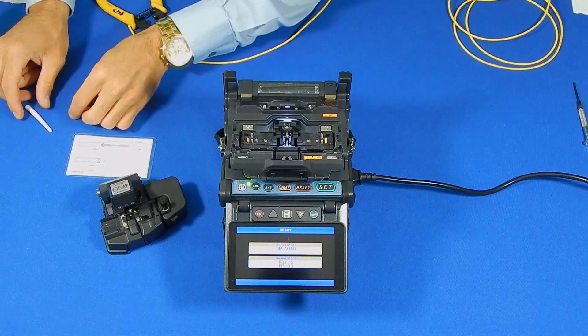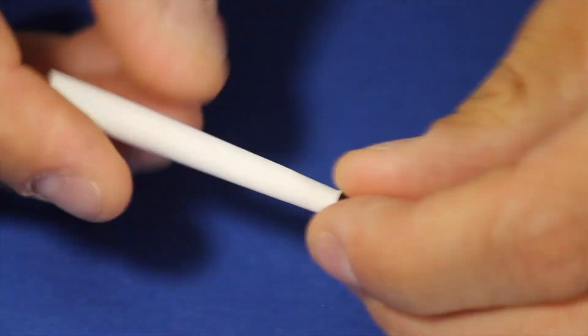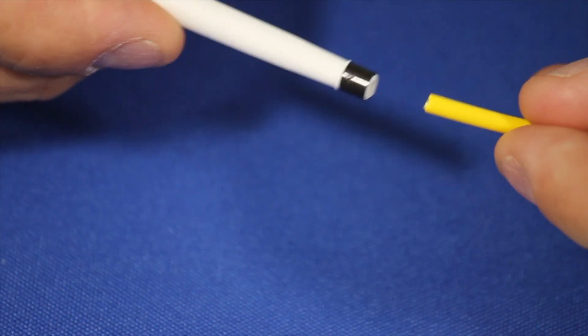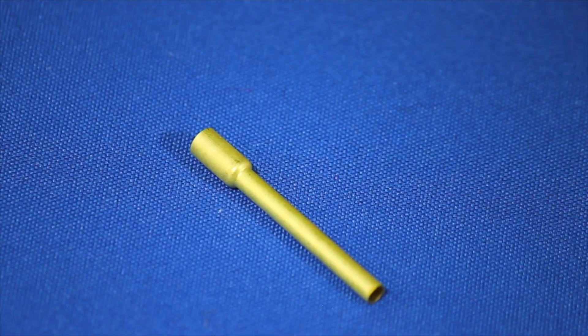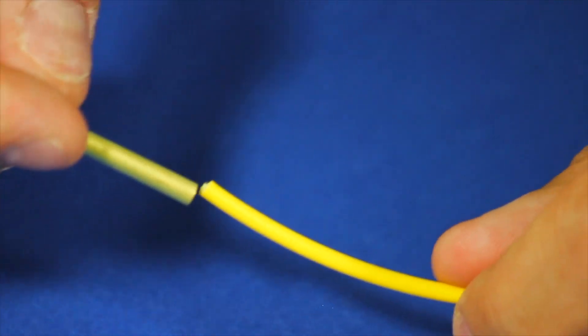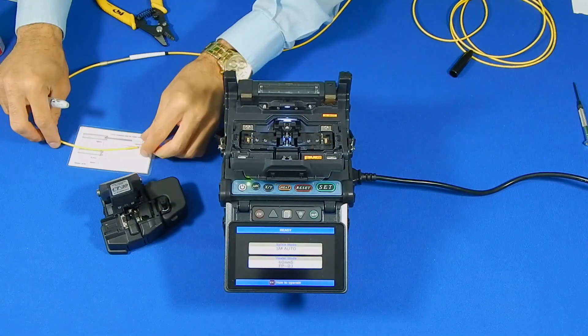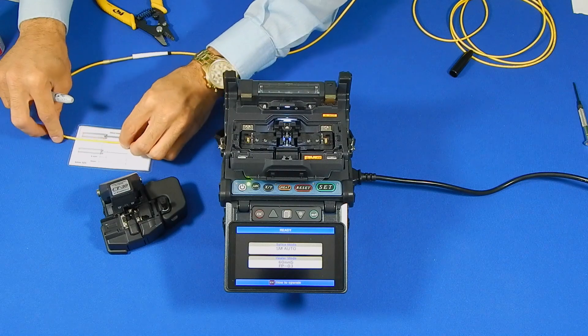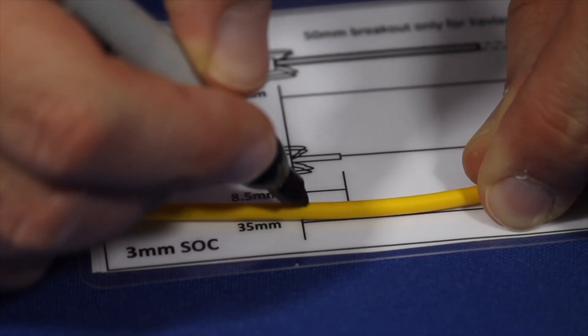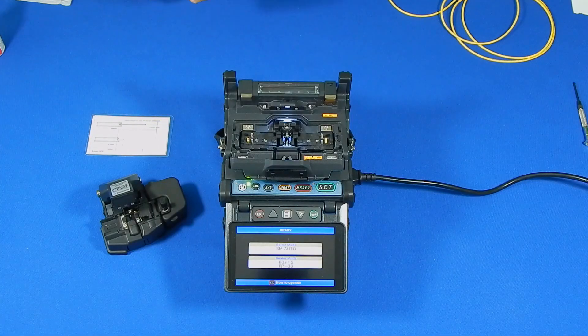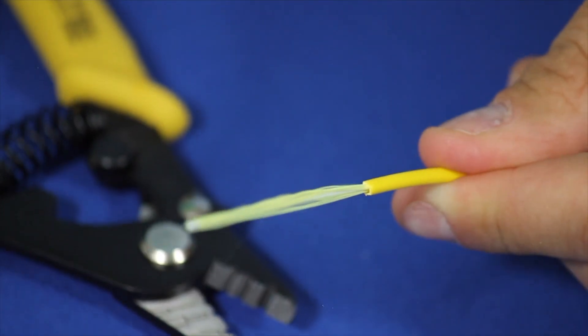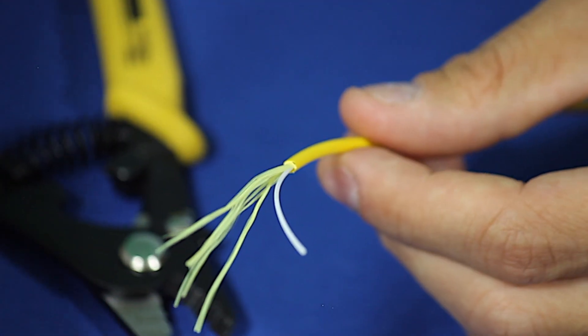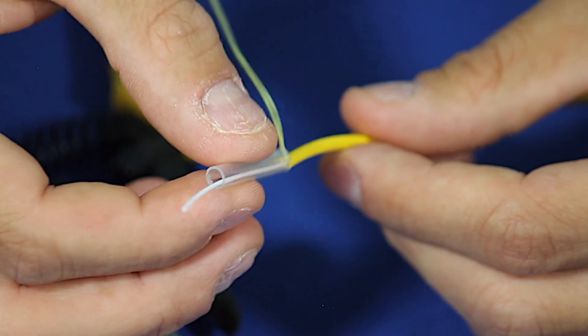Place the boot crimp onto the end of the boot and slide the boot onto the cable. The larger opening of the boot and crimp should face towards the end of the fiber where the splice will be made. Next, slide the brass crimp sleeve onto the cable. Using the provided strip chart, mark and remove 35mm of the 3mm outer jacket. Use the shrink sleeve to hold the Kevlar back as you place it on the cable.